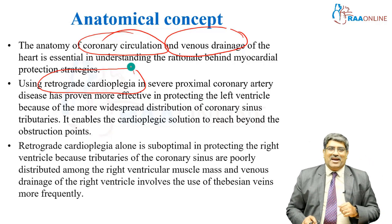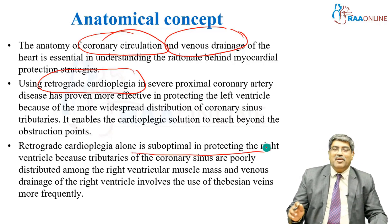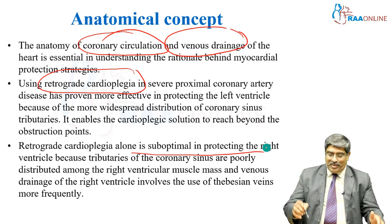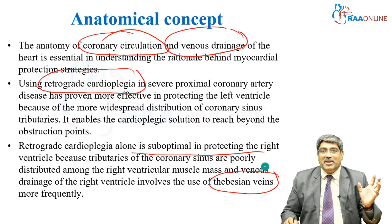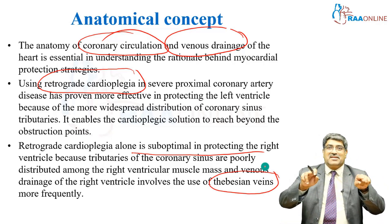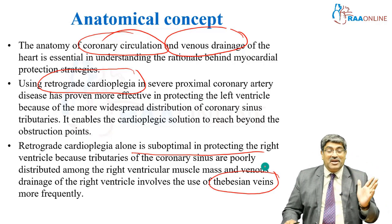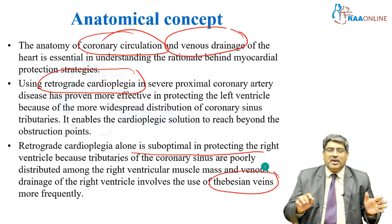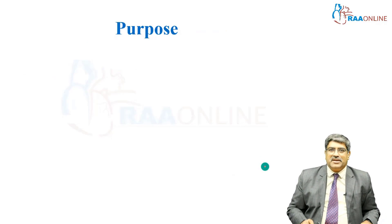However, retrograde cardioplegia may be suboptimal in protecting the right ventricle, because the right ventricle may drain via the Thebesian veins, not the coronary sinus. So by giving cardioplegia into the coronary sinus, you can protect the left ventricle, but the right ventricle might remain unprotected. These are important anatomical concepts when administering cardioplegia.